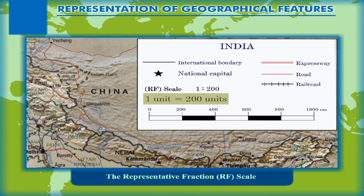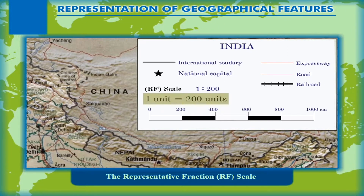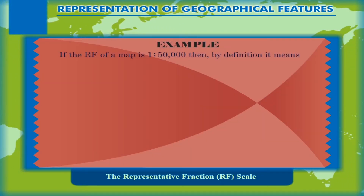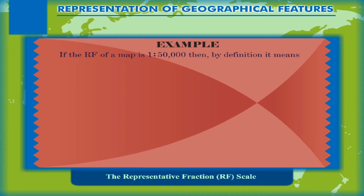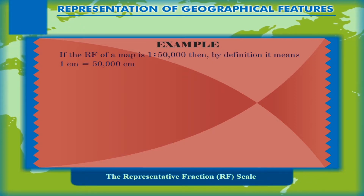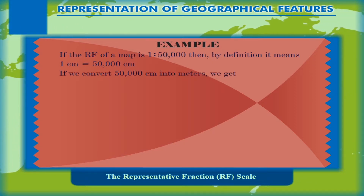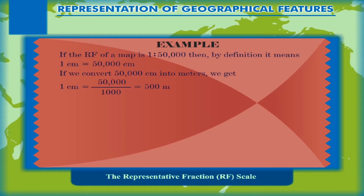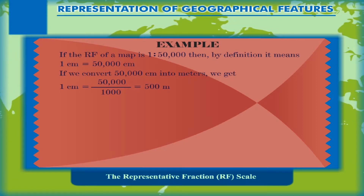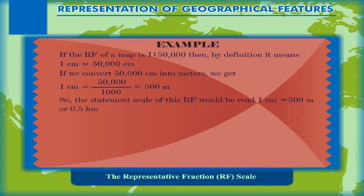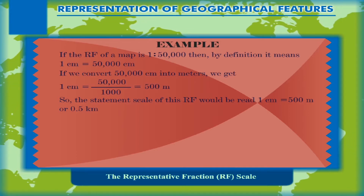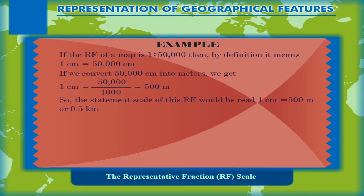This scale however needs some calculation to get an idea of what it actually represents. For example, if the RF of a map is 1:50,000, then by definition it means one centimeter is equal to 50,000 centimeters. Converting 50,000 centimeters into meters: 50,000 divided by 1,000 equals 500 meters. So the statement scale of this RF would read: one centimeter is equal to 500 meters, or 0.5 kilometer.